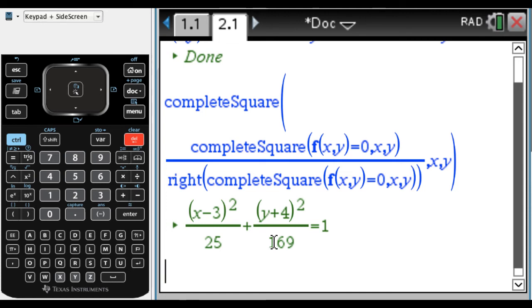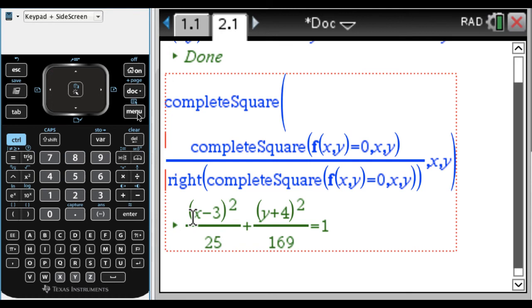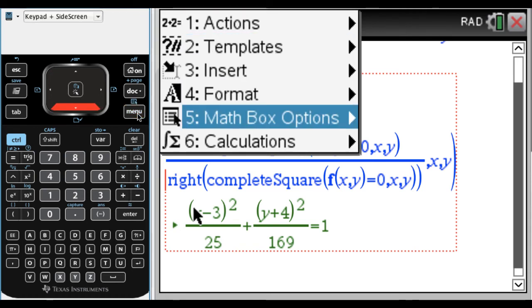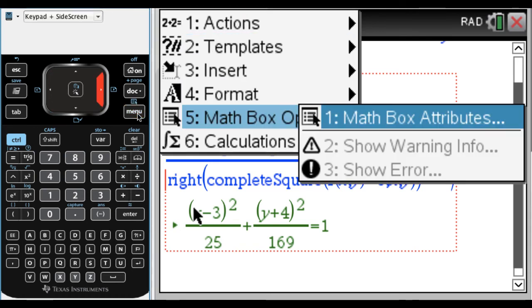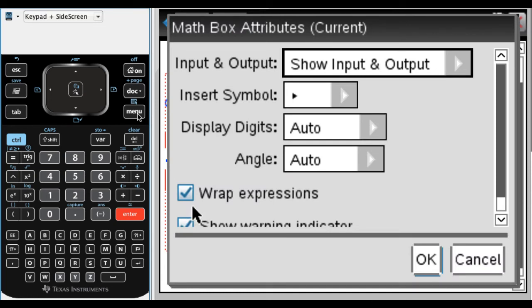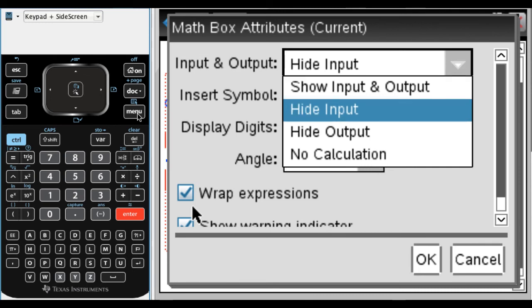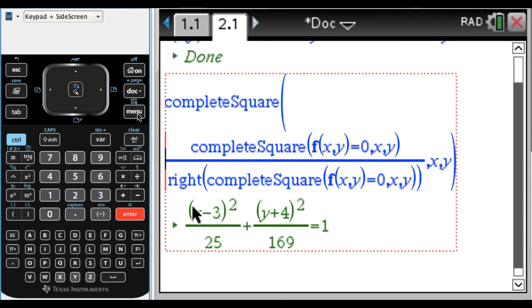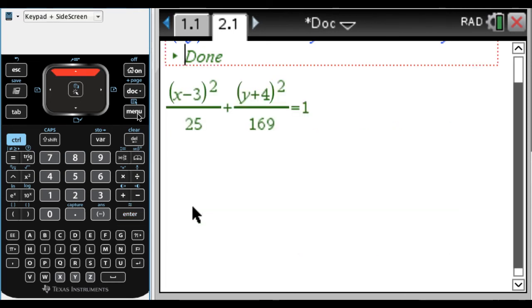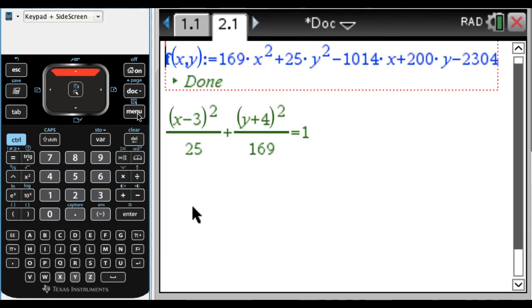What I'm going to do before I go up and alter anything, I'm going to arrow into this box and press menu, and go to math box options and math box attributes. And here where it says show input and output, I'm going to click to the right and say hide input, because I don't really need to see that. So press enter, press enter again, and when I arrow out of this box, what's nice is that it just leaves the answer.